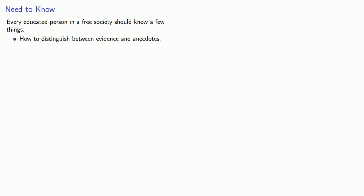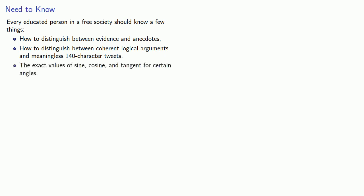But every educated person in a free society should know a few things, like how to distinguish between evidence and anecdotes, how to distinguish between coherent logical arguments and meaningless 140-character tweets, and the exact values of sine, cosine, and tangent for certain angles.